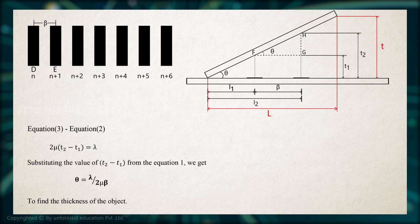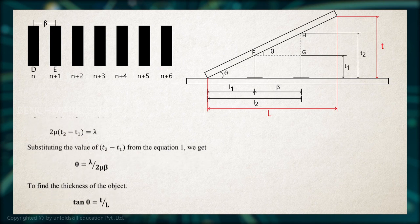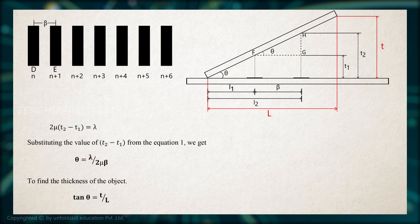Now to find the thickness of the object kept between the glass plates. From the figure, tan theta equal to T divided by L, where L is the distance between the object and the point where the glass plate meets.